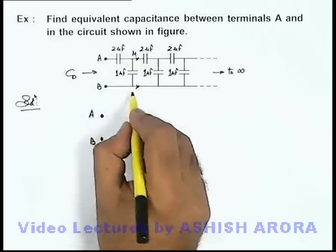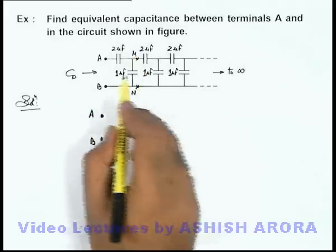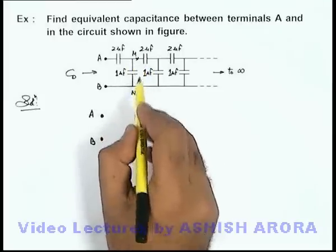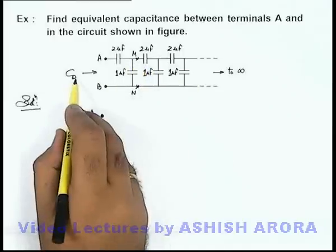Then we can say as the number of sections are infinite, the equivalent capacitance beyond the point M and N will also be C₀.